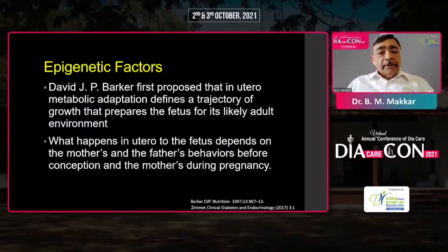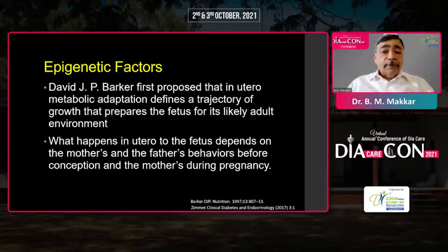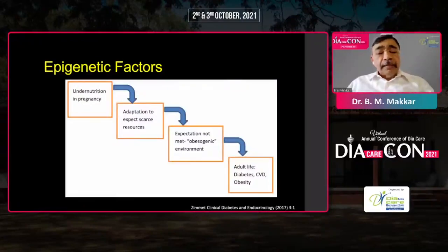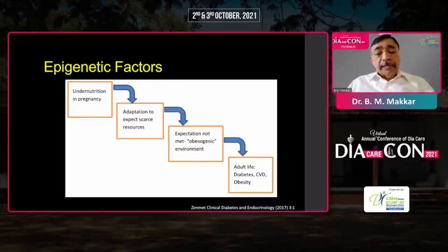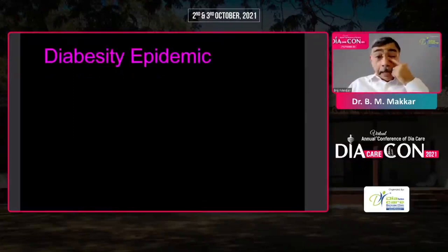We all know the Barker hypothesis. Barker first proposed that in utero metabolic adaptations refine a trajectory of growth that prepares the fetus for its likely adult development environment. What happens to the fetus in utero depends on the mother's and father's behavior during conception and during the mother's pregnancy. Possibly undernutrition in pregnancy led to adaptation in the fetus to expect a scarce resource environment, but when the baby was born it met the obesogenic environment, and the whole story changed, leading to development of obesity.